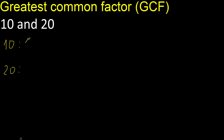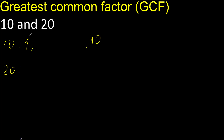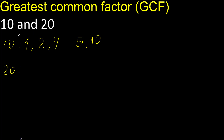Factors always start with 1. 10 divided by 1 is 10. Next, 2 divided by 2 is 5. Next, 3 — cannot be divided by 3. Cannot be divided by 4. Next, 5 — 5 is here.